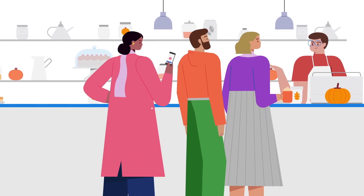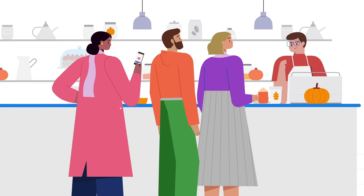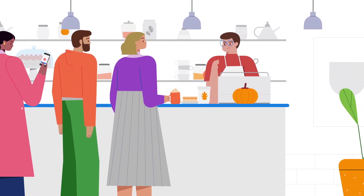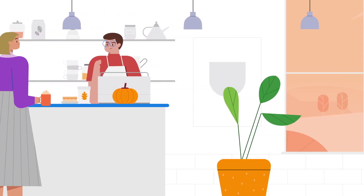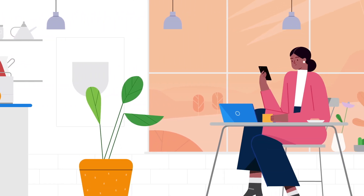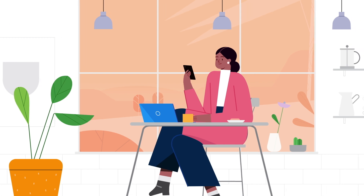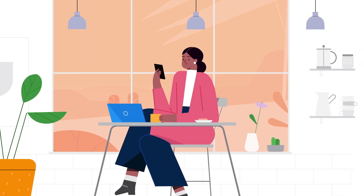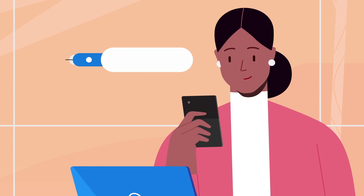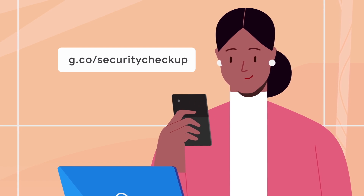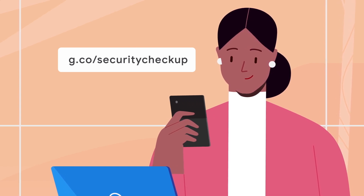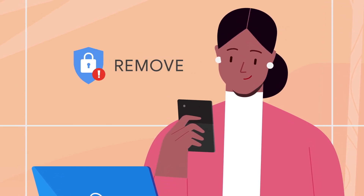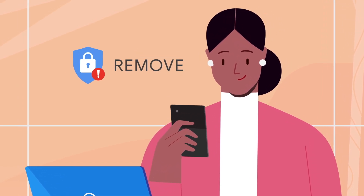The app did just what she needed it to, but she's done using it, so she doesn't want it to have access to any more of her Google data. Although an app could have copied the data you've already shared, you can prevent it from accessing future data by signing into g.co/security checkup, then going to third-party access to remove apps with access.